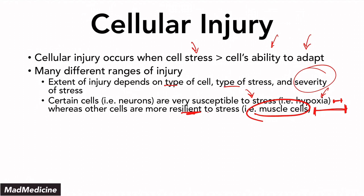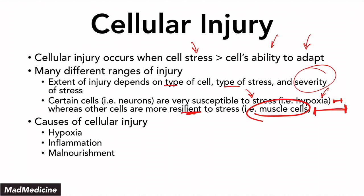When it comes to cellular injury and its causes, there are several causes you need a good understanding of — this is just an overview. One example is hypoxia. Another is inflammation. Malnourishment can also cause cellular injury, as well as genetic mutations that don't allow cells to function properly and may cause autoimmune disorders. Trauma is also a very important cause of cellular injury that a lot of people forget. We'll go into a deeper dive into each of these causes in upcoming lectures.